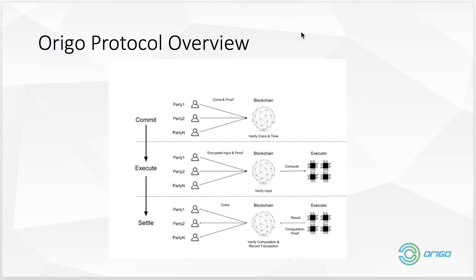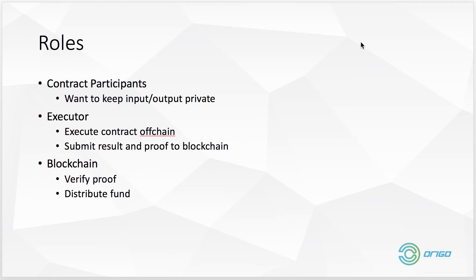This is the protocol we talked about yesterday: we have commit, which is submitting the hash and submitting something to the blockchain to record it; then execute, which is sending that data off-chain to do computation; and settle, which is bringing back the proof, verifying it, and then completing the process.